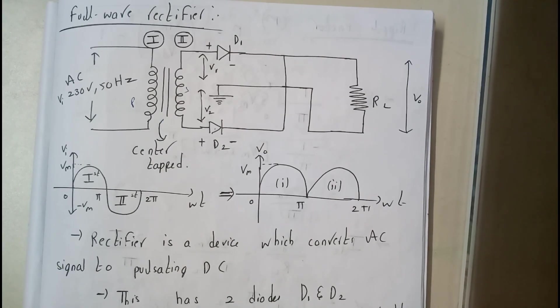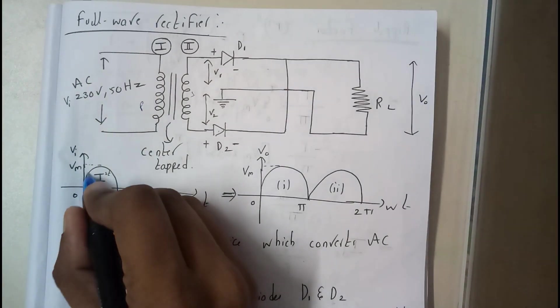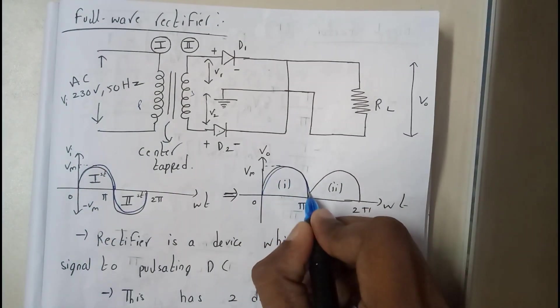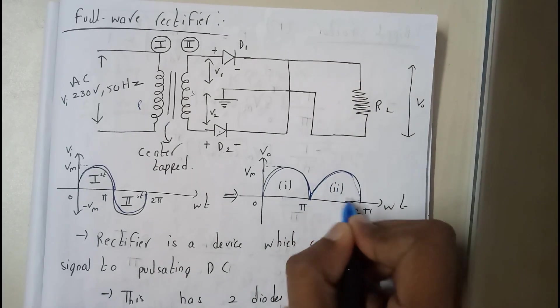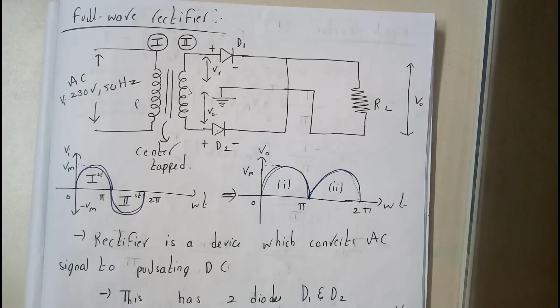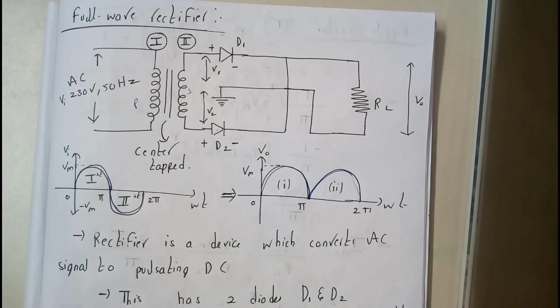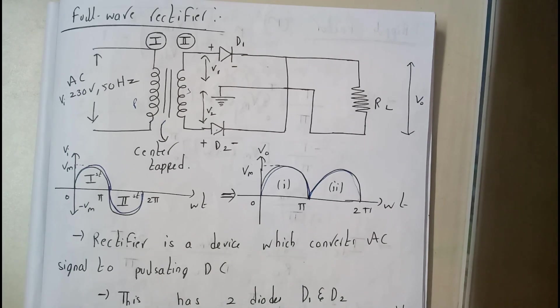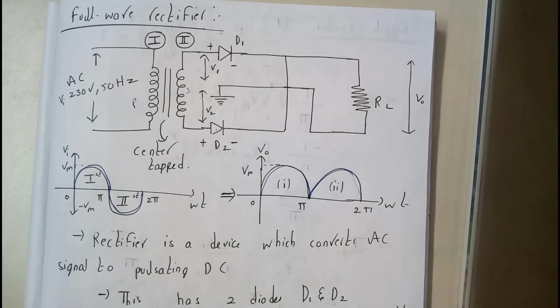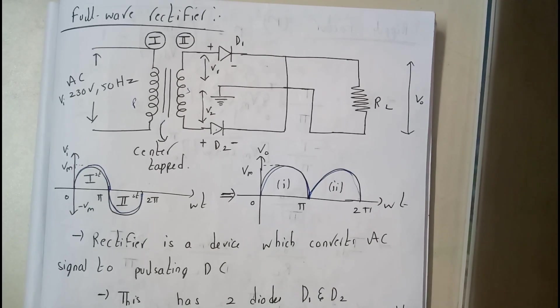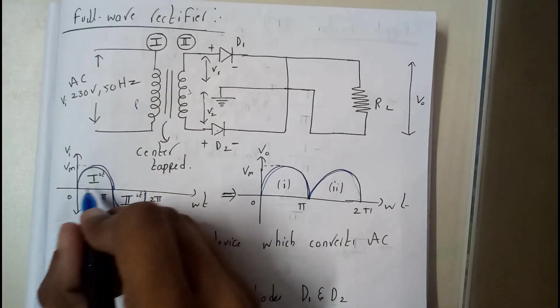Basically, a full-wave rectifier, if the input is given like this—a positive cycle with a negative cycle—it's going to make both of them positive. So avoiding this negative and converting it into a positive cycle. That's really a hundred percent plus point for this, right? It's far better than a half-wave rectifier.